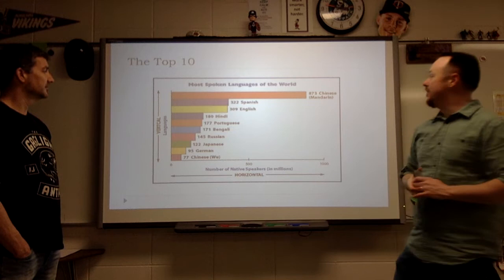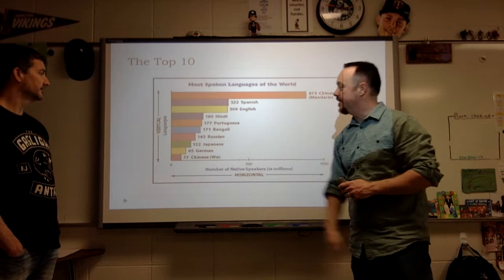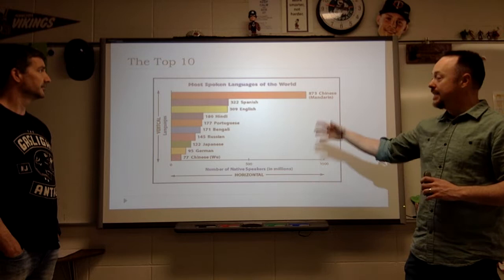Here's your top ten most common languages spoken in the world. Looking at the numbers in millions, Chinese or Mandarin specifically is at 873 million. There are a couple different types of Chinese — Wu Chinese is on the list as well. Mandarin is the main form, followed by Spanish, then English. These are native speakers we're looking at.